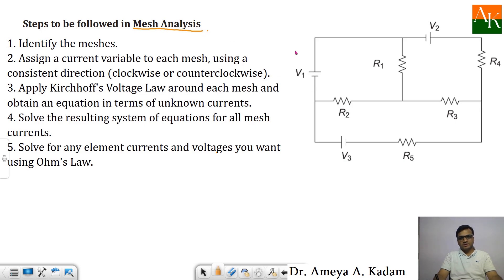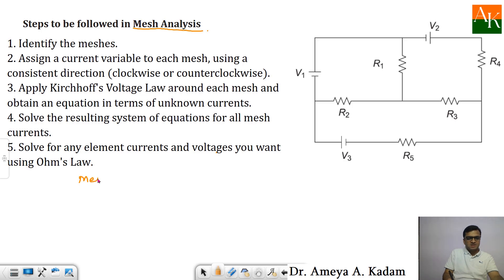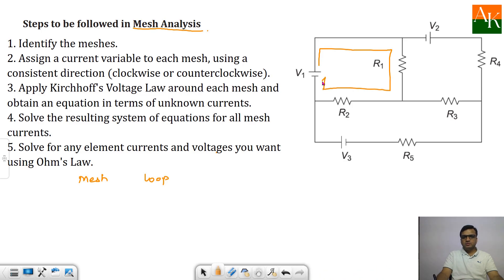What are the steps that we need to follow in mesh analysis? First of all, identify the meshes in the given circuit. One should understand the difference between the mesh and loop. If you select a path like V1, R1, R2 and back to V1, this closed path does not contain any other loop within it. So this is a mesh.